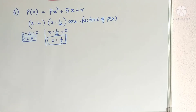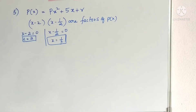The fifth problem is: if (x minus 2) and (x minus half) are the factors of px² + 5x + r, show that p equals r. So here the given polynomial is p(x).